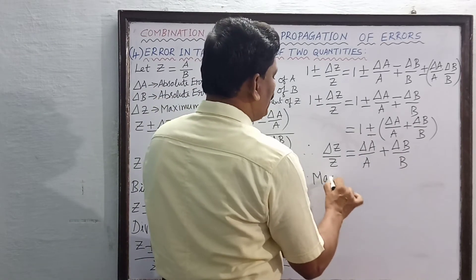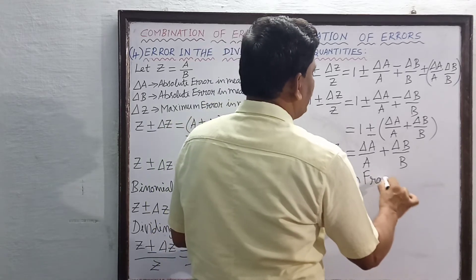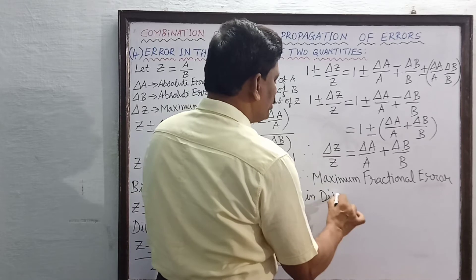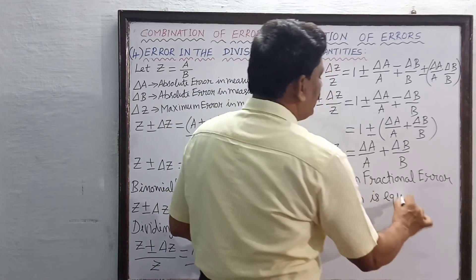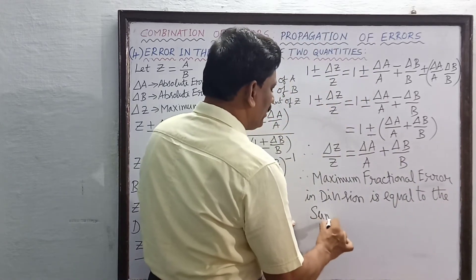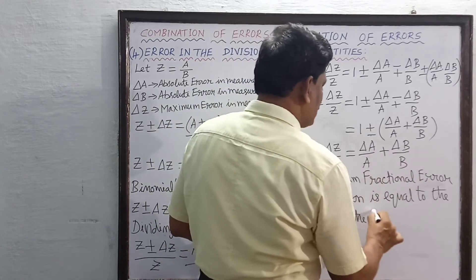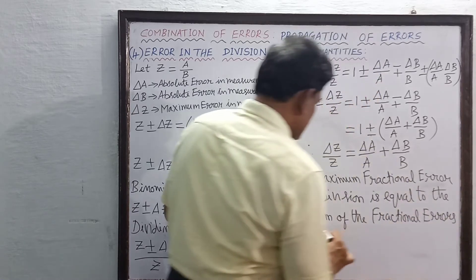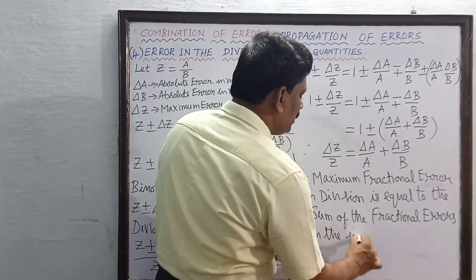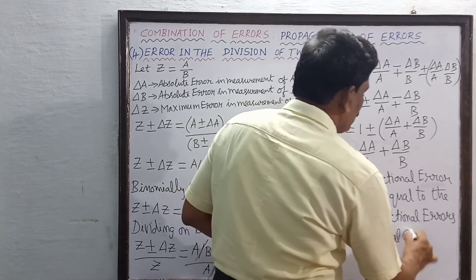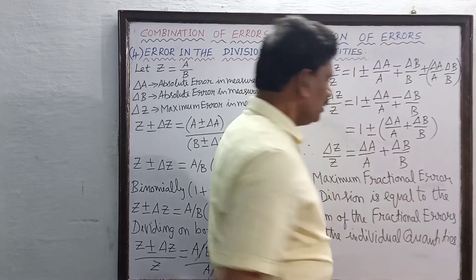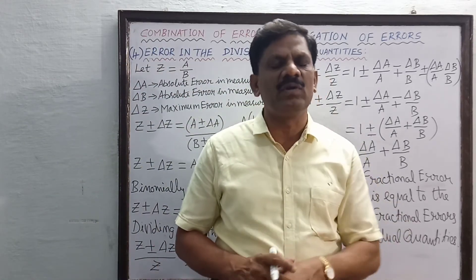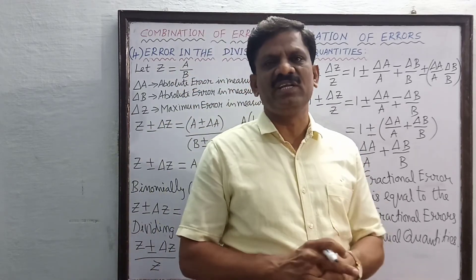So here also we have proved that delta z by z is the fractional error in the quotient. The right hand side: delta a by a is the fractional error in the measurement of a, and delta b by b is the fractional error in the measurement of b. This is the same rule as for the product. Therefore, the maximum fractional error in the division or quotient is equal to the sum of the fractional errors in the individual quantities.